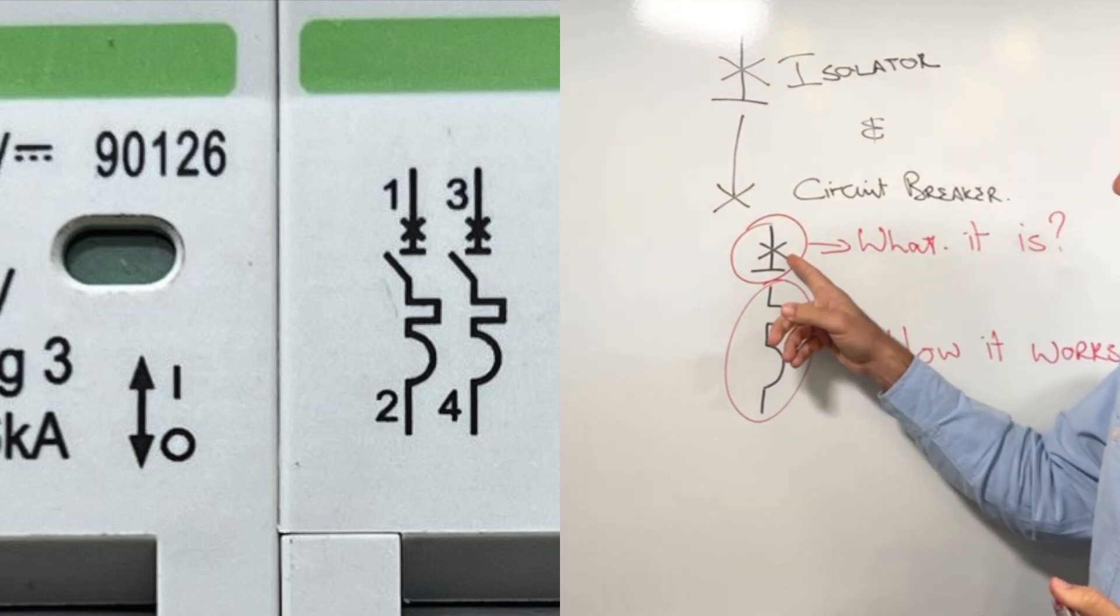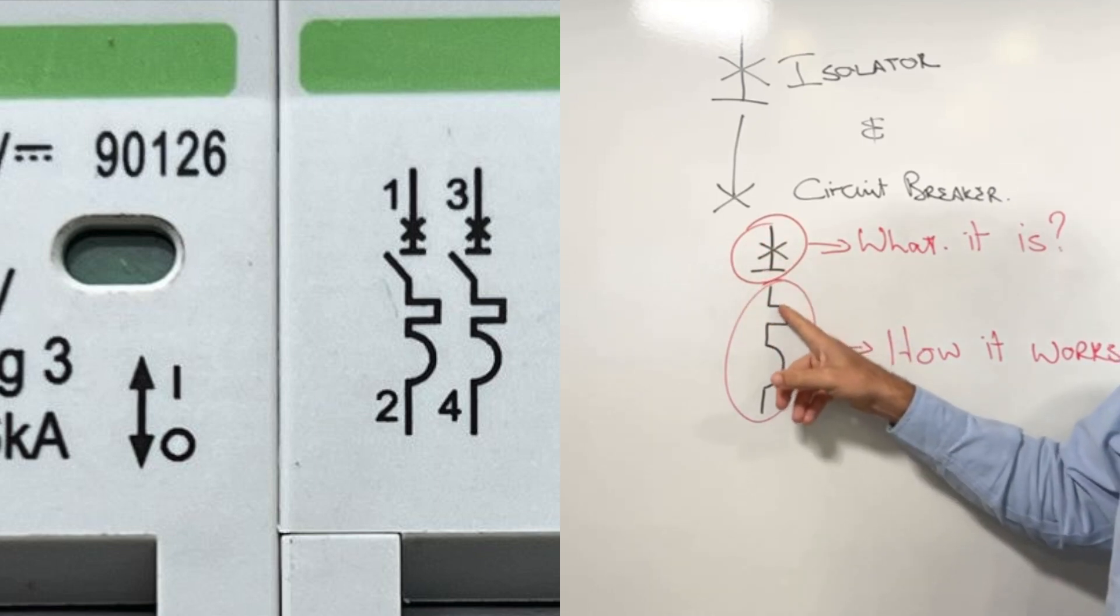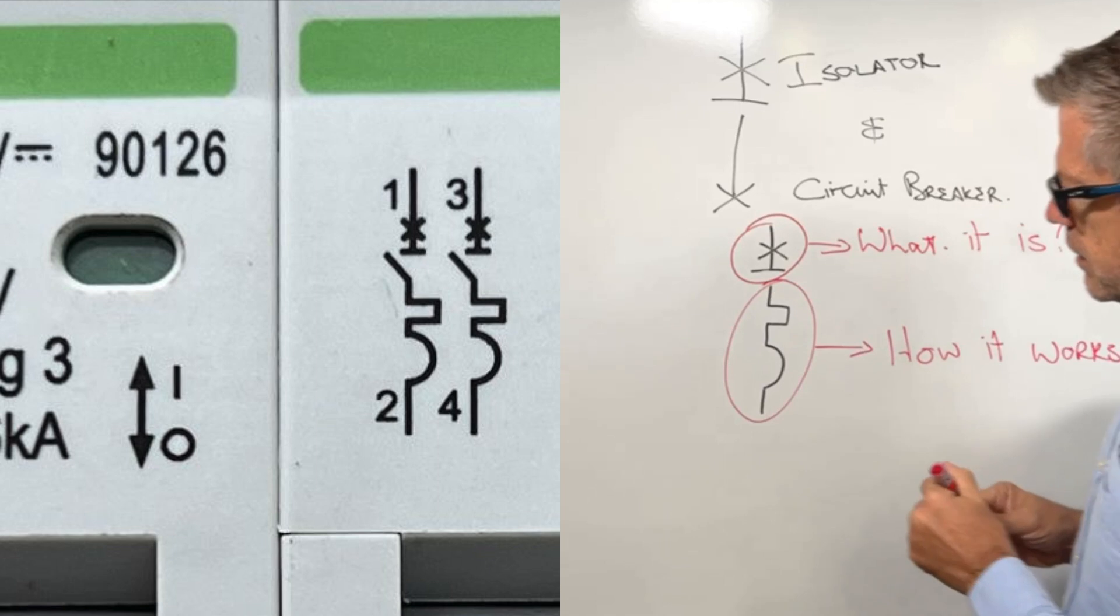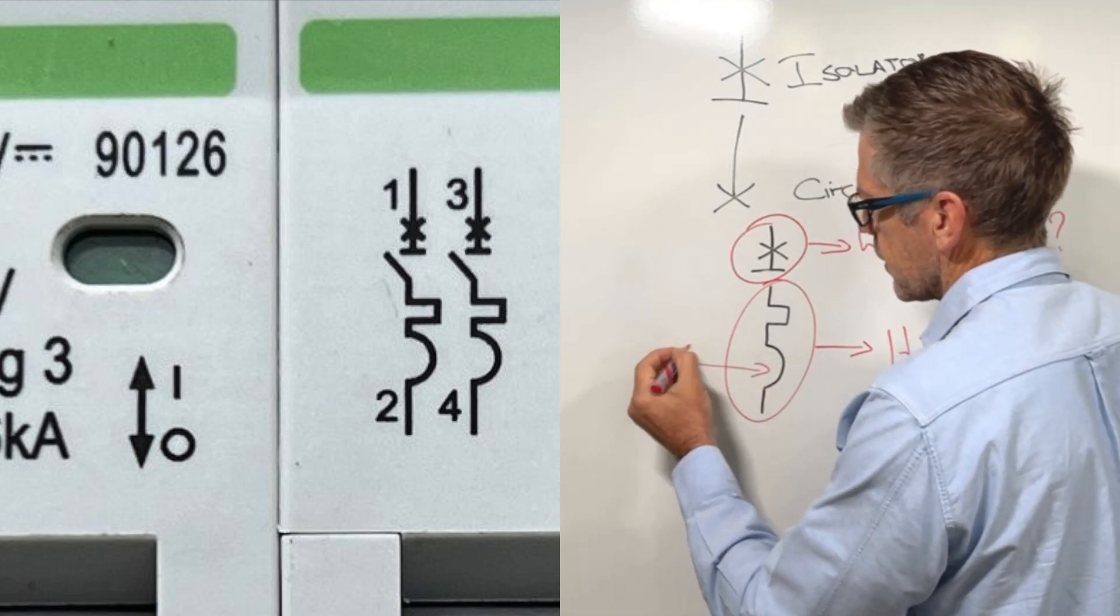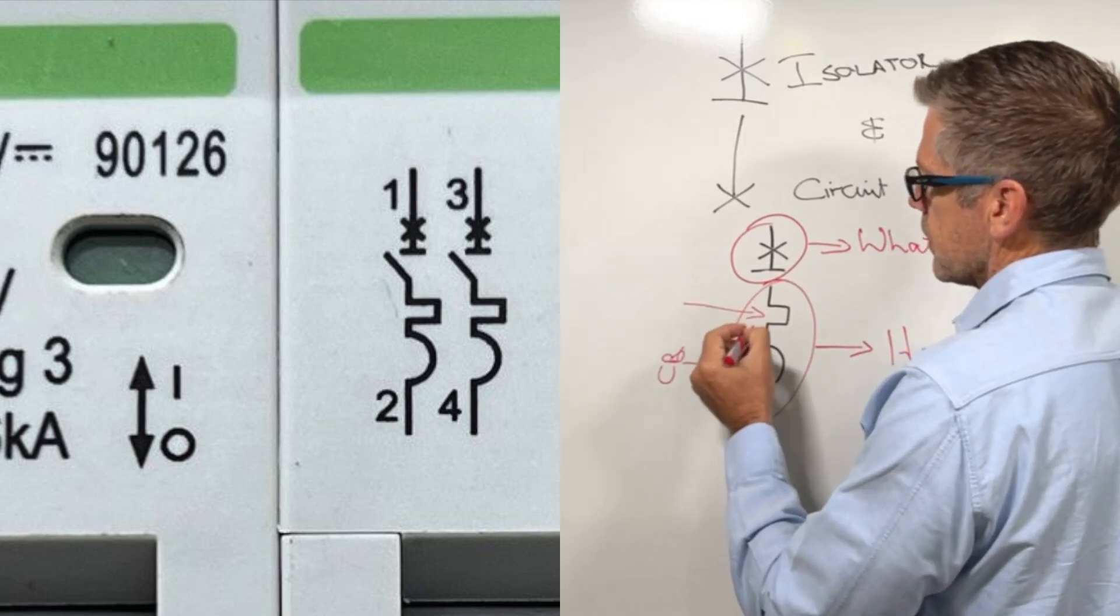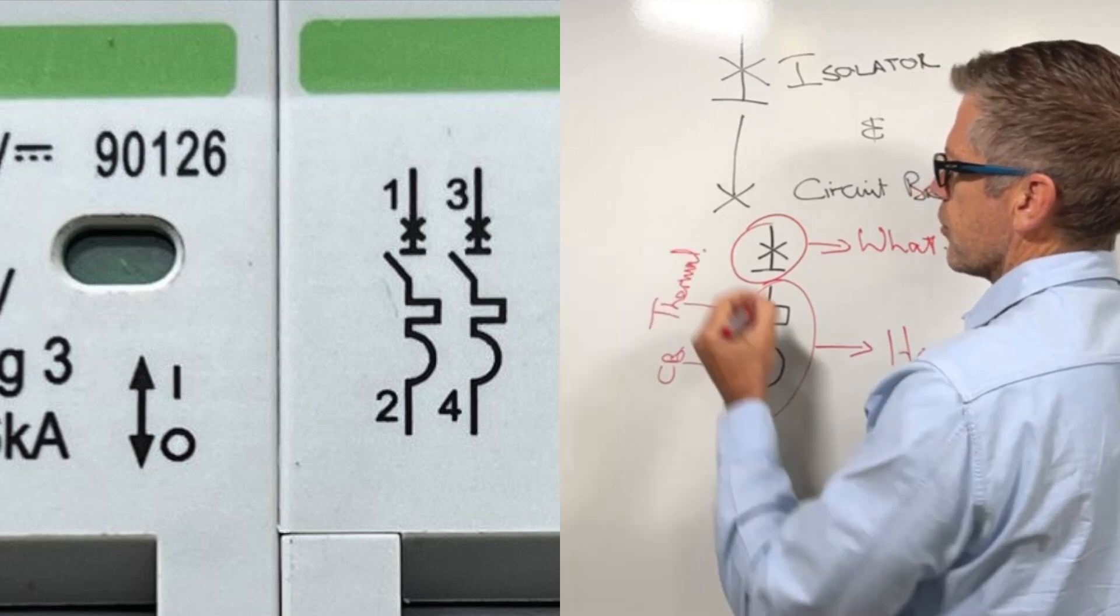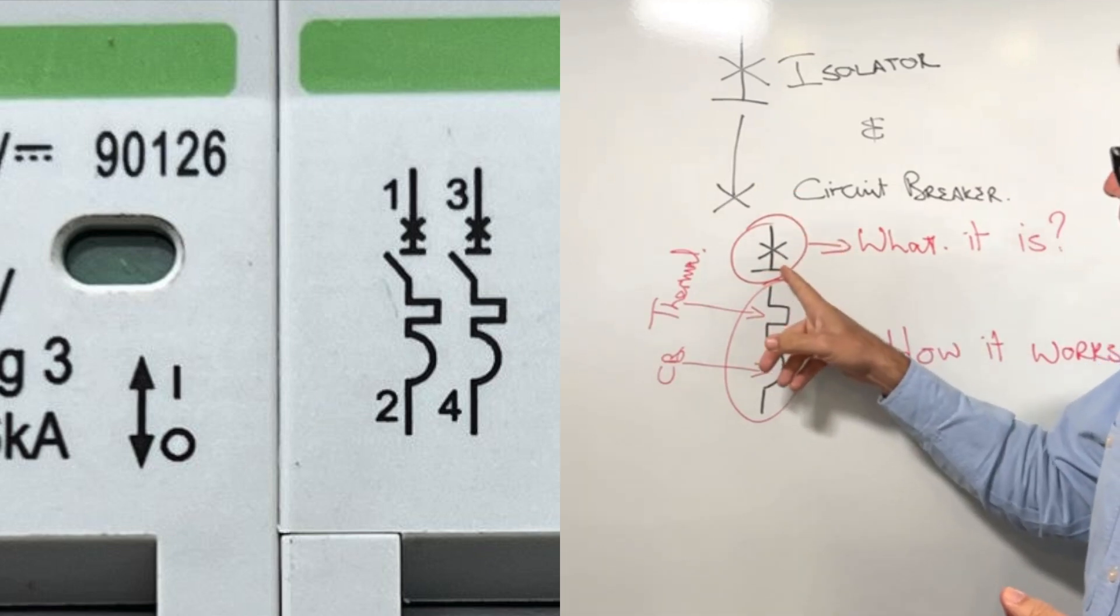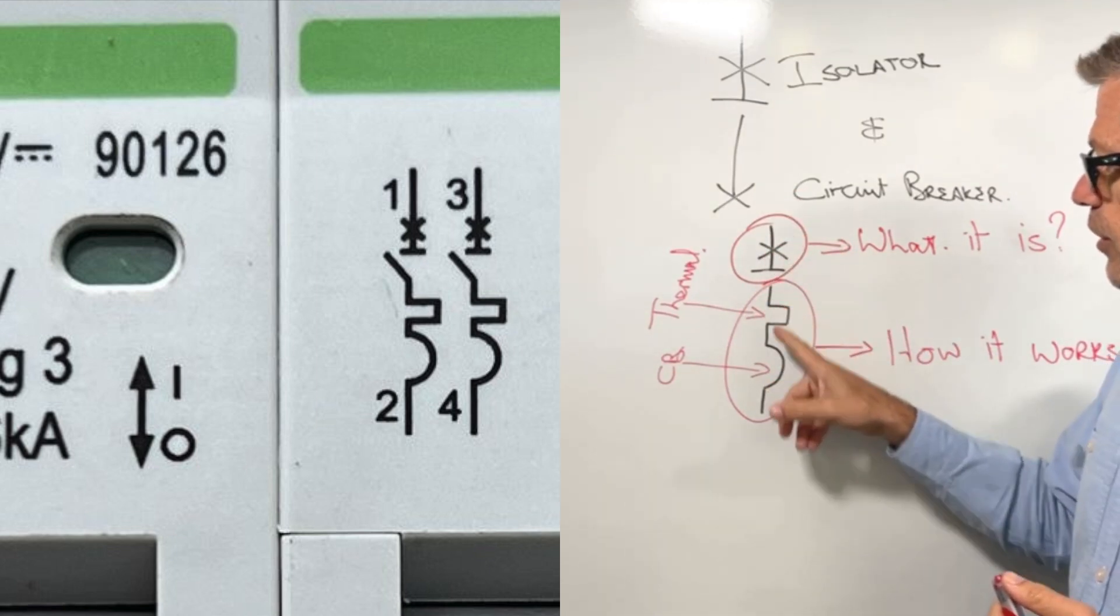The top section tells you that this is both a circuit breaker and an isolator, and the bottom section tells you what it does. This is the IEC symbol for circuit breaker, which means that it will trip on overload. And that is a symbol that looks at thermal protection. So this is a circuit breaker and an isolator with thermal and overload function.